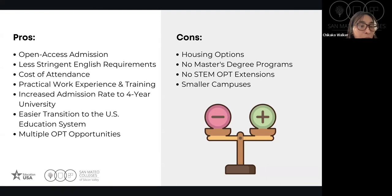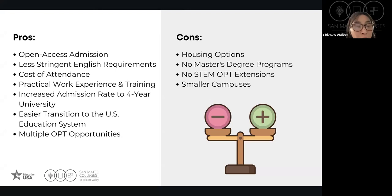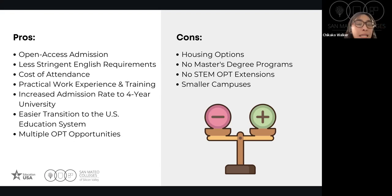I also want to mention multiple OPT opportunities. If you plan to do an associate degree and then a bachelor's degree later, you can actually have two OPTs. For example, if you first complete an associate degree, apply for OPT, and work one year in the United States, then decide to pursue a bachelor's degree at a four-year university — after getting that bachelor's degree, you can apply for OPT again. And if you are in a STEM major, you can extend your OPT beyond one year. So by going through the community college system, students have the option to do OPT multiple times.